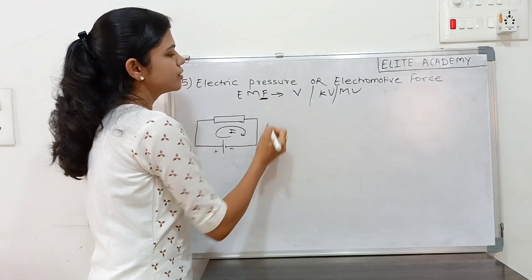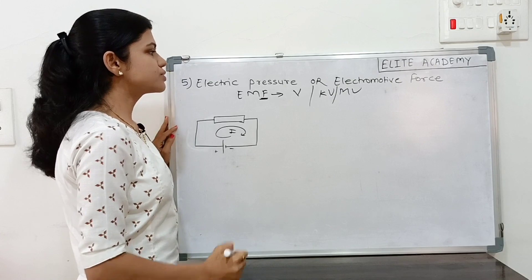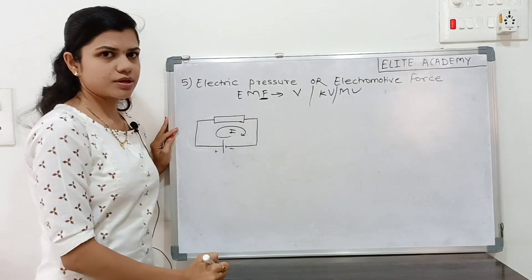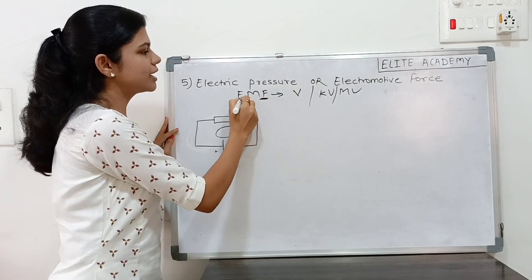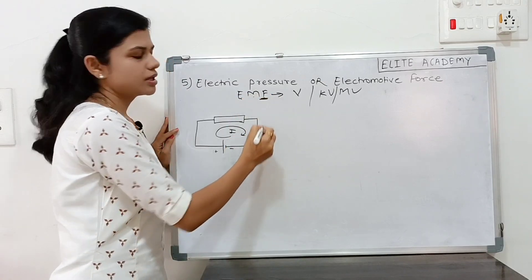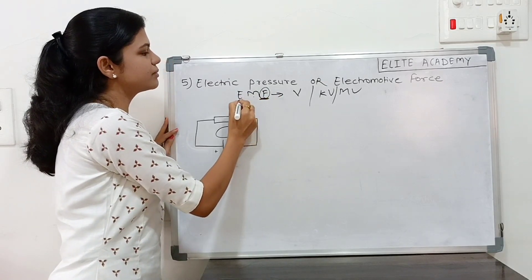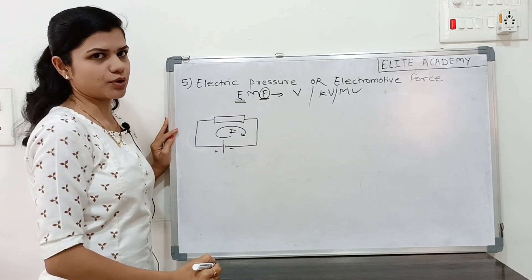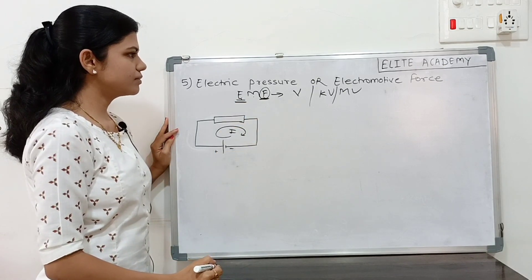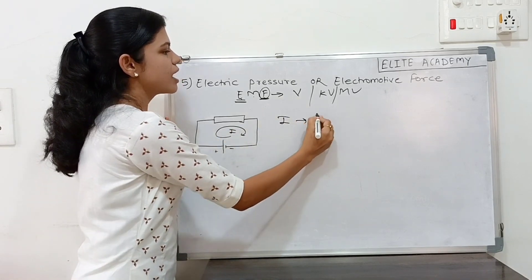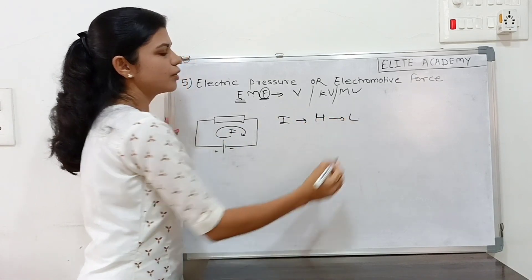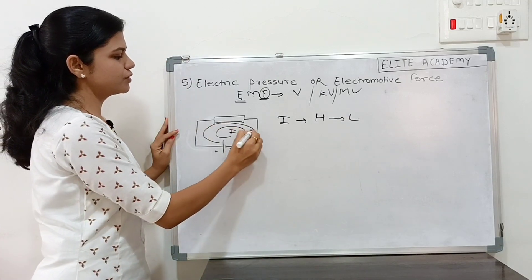This is nothing but the force that causes to flow of electrons or current. The current flows from high potential to low potential. From positive to negative.